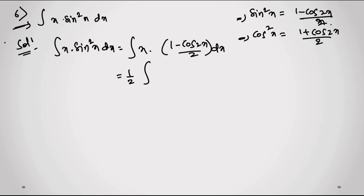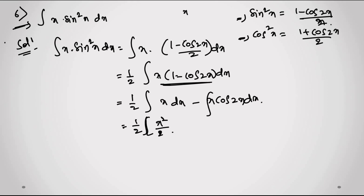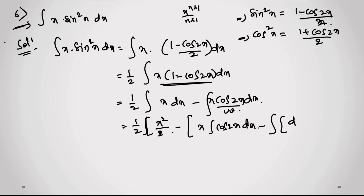I separate this into: (1/2)·[integral of x dx minus integral of x·cos(2x) dx]. The first part gives x²/2. For the second part, applying IBP: x·sin(2x)/2 minus integral of 1·sin(2x)/2 dx.